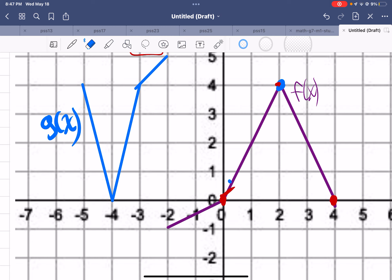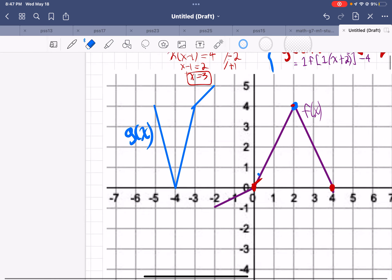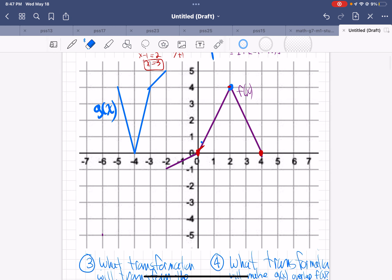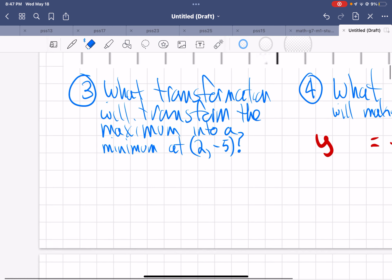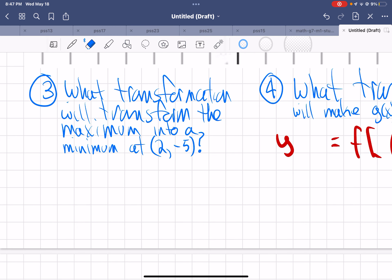It's a general transformation, which means it's just some shape. So here's what we're going to do. Here's the question: What transformation will transform the maximum into a minimum at 2, negative 5?